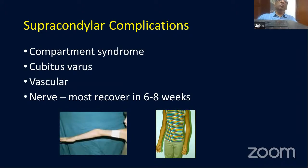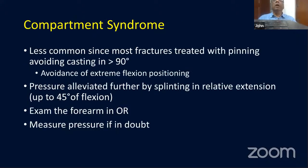A closed nerve injury documented prior to manipulation usually does not need exploration — with some exceptions, especially if associated with a vascular injury. Compartment syndrome is essentially a clinical diagnosis: pain out of proportion to what you expect. It is very often due to a tight cast or tight bandages, which must be avoided.